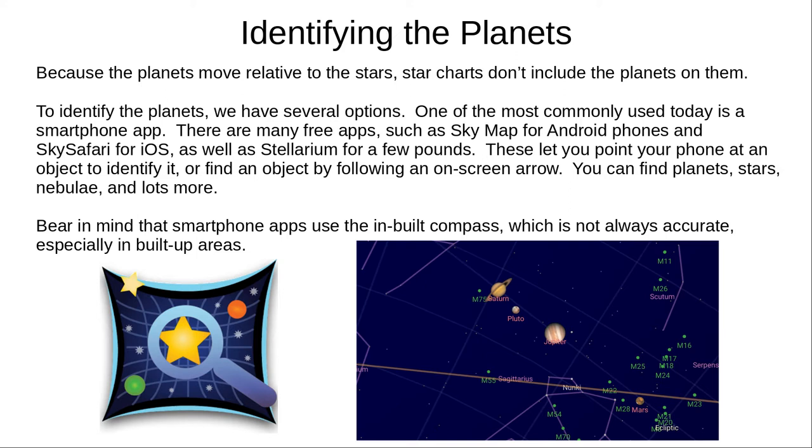Now, let's talk about how to find and identify planets in the sky. Because they move relative to the stars, star charts don't usually include them. The one I showed you before is useless except on one specific day years ago.